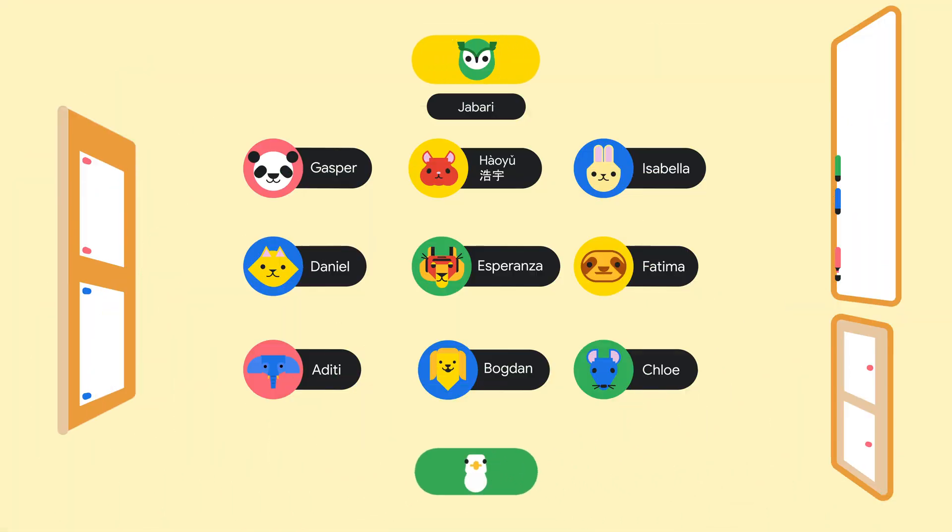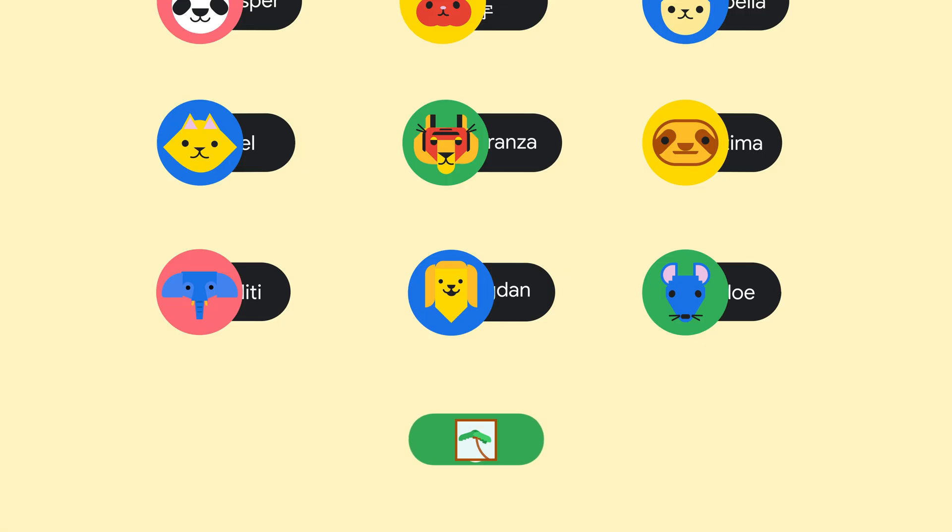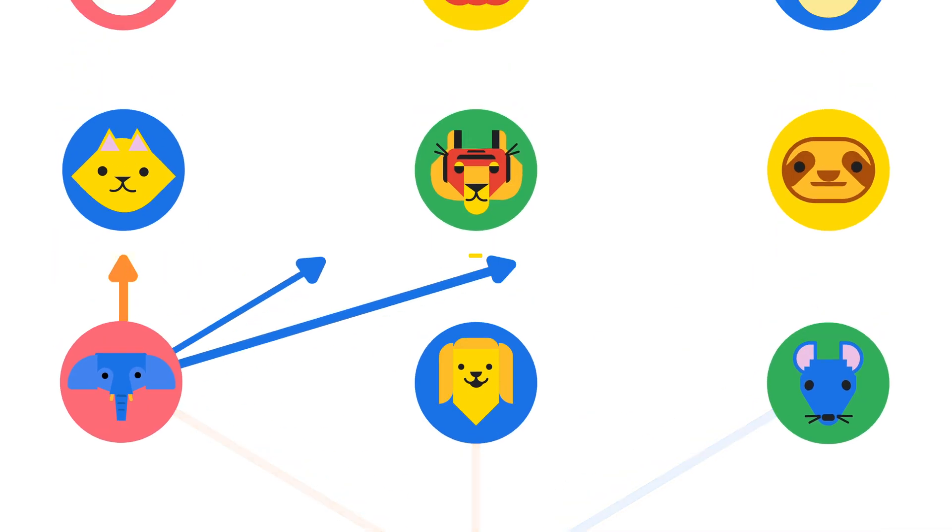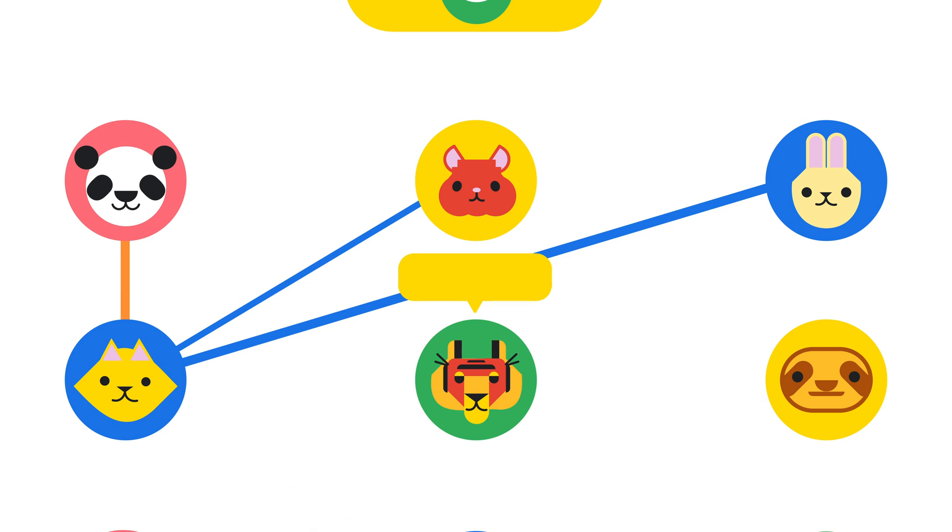Imagine you're a teacher assigning your students a group project. 'Class,' you say, 'I'd like you to work together to determine the kind of tree in the photograph.' The students start sharing their guesses with each other, passing their ideas forward to the students in the row ahead of them until they reach Jabari at the front of the classroom.